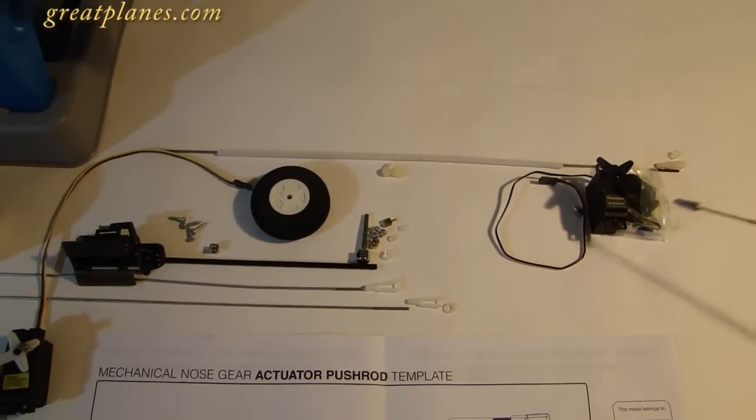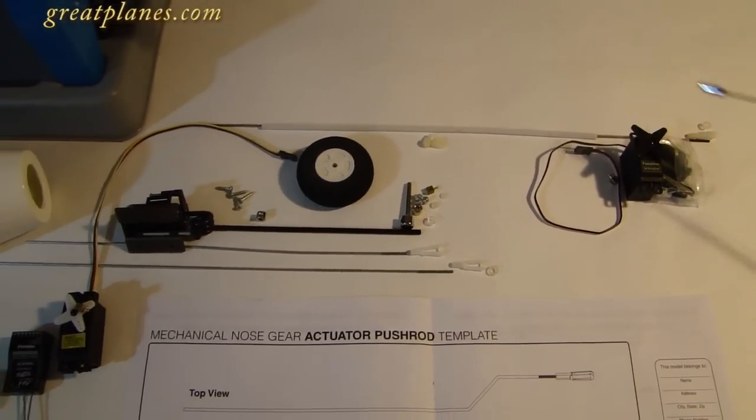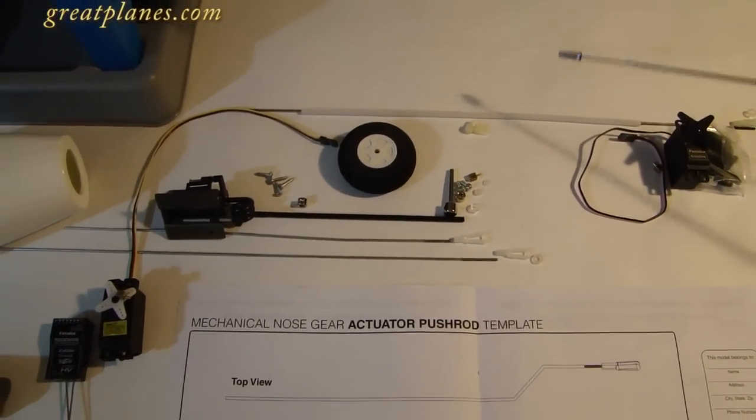Let's go over some of the other items you're going to need to complete the build. We have our throttle servo here and we selected the Futaba S3004. We have all the hardware including the pushrod tubes and pushrod.